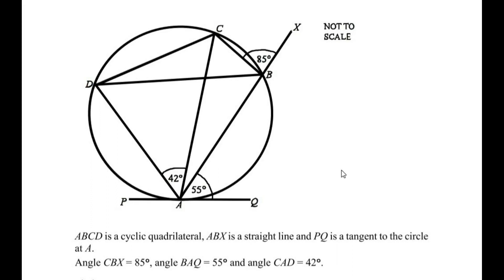Hello and welcome to my channel. In this video we are going to solve an example from circle theorems. ABCD is a cyclic quadrilateral, ABX is a straight line, and PQ is a tangent to the circle at point A. Angle CBX is 85 degrees, angle BAQ is 55 degrees, and angle CAD is 42 degrees.